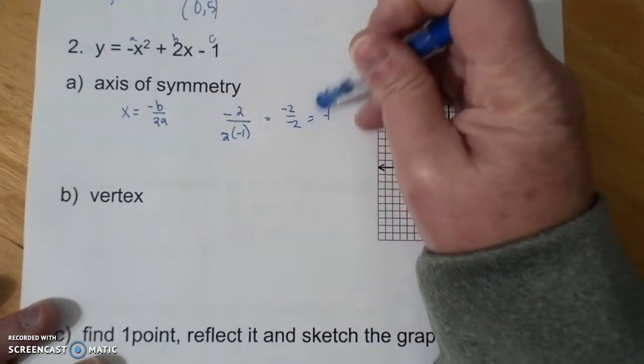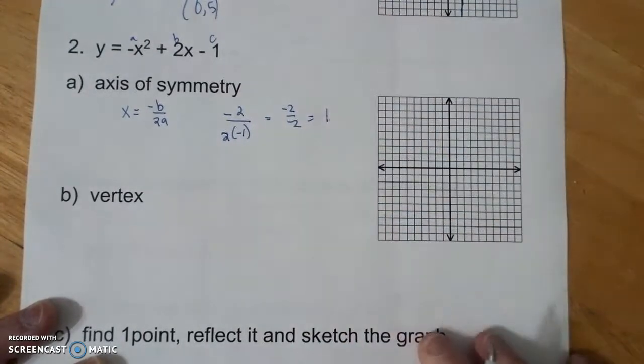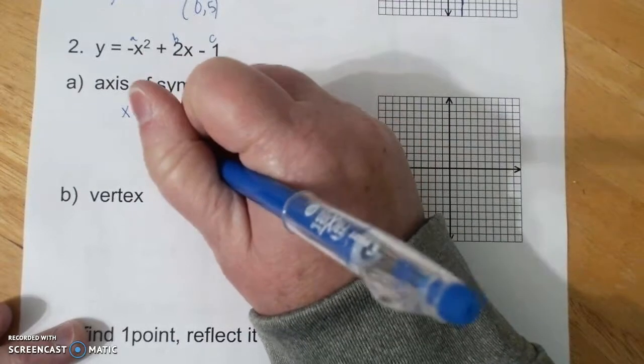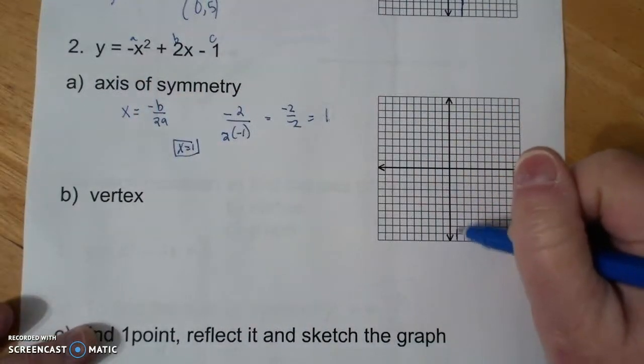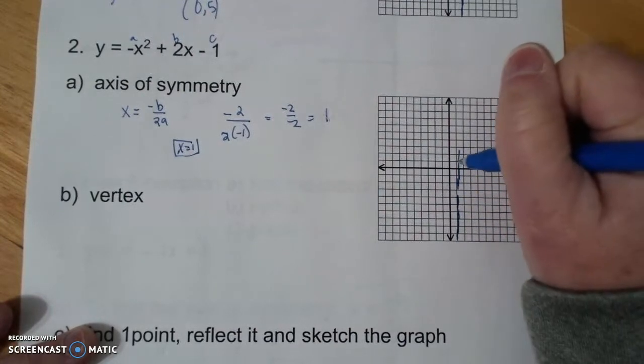Oops, which becomes positive 1. Sorry. Integer operation is still kicking me. So I have the axis at x equals 1. Remember, it is a vertical line, undefined slope. It's actually a box. I just kind of squiggle it in, scribble it in.